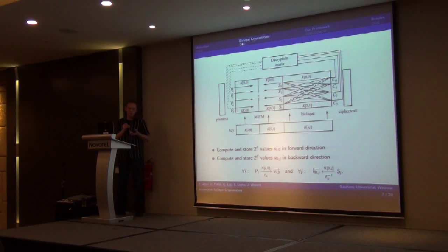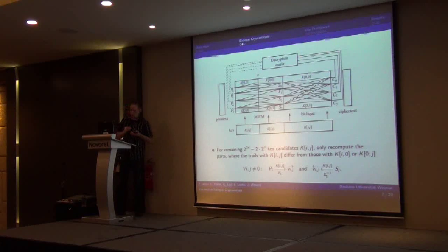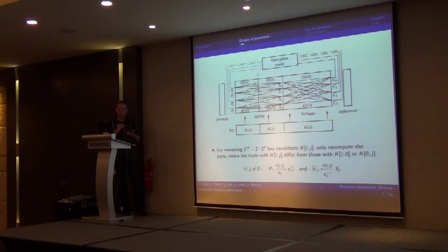In the following, the adversary for all remaining 2 to the 2d minus these 2 times 2 to the d computations, the adversary has the ability to recompute those parts of the remaining rounds where the states differ in computations. From that aspect, the computation advantage can be reduced significantly,